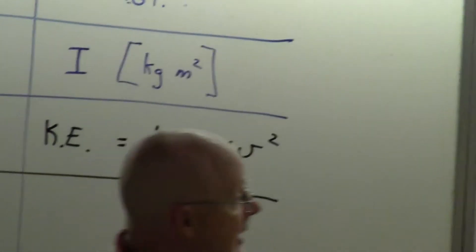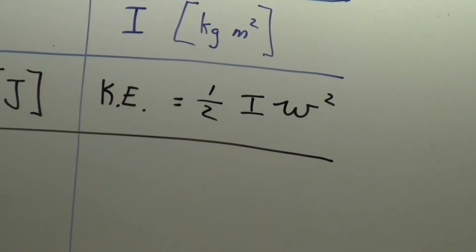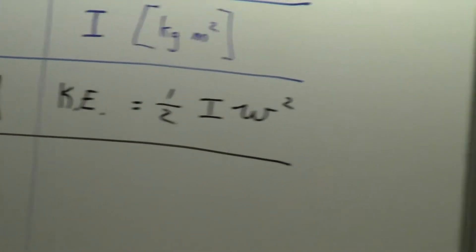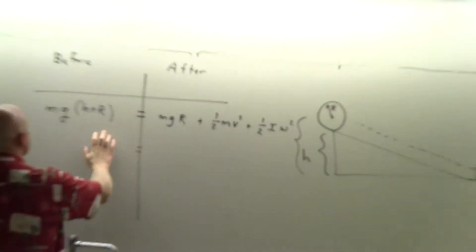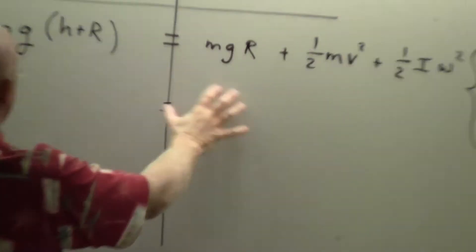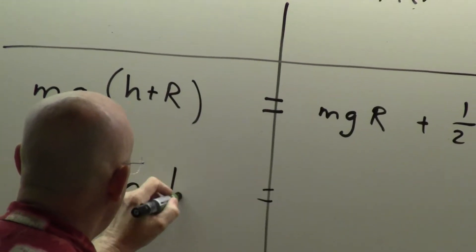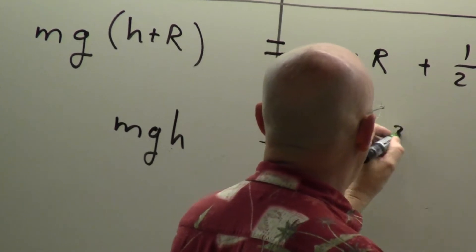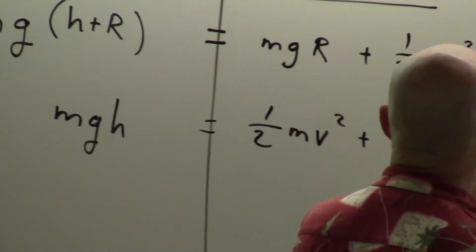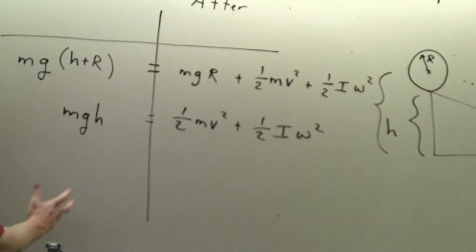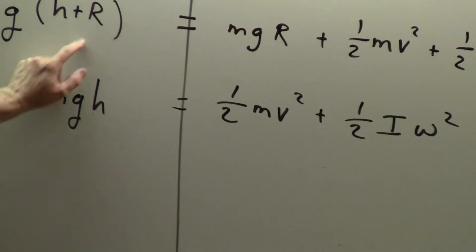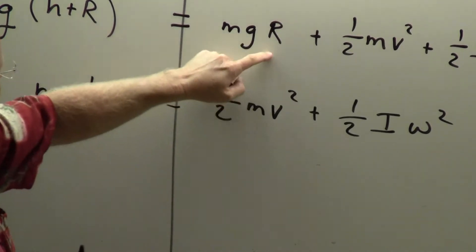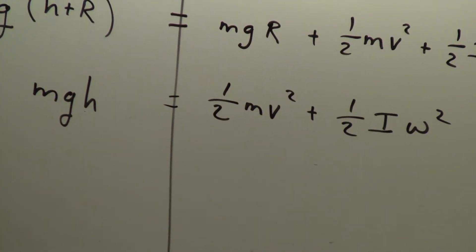The potential energy and kinetic energy were already covered in Chapter 7. What I'm adding here is that at the bottom of the hill it's not just translating, it's also rotating. If you do a little math, you can see that the radius of the object and the MGR appears on both sides of the equation, so those cancel off.